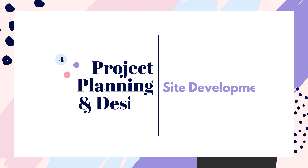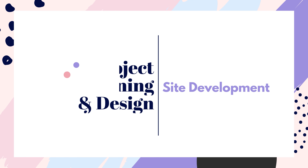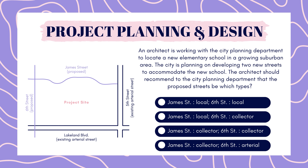Next up is project planning. An architect is working with the city planning department to locate a new elementary school in a growing suburban area. The city is planning on developing two new streets to accommodate the new school. The architect should recommend the proposed streets be which types? James Street as local and 6th Street as local; James Street as local and 6th Street as collector; James Street and 6th Street as collector; or James Street as collector and 6th Street as arterial. Pause here to answer.